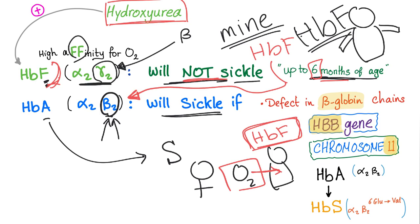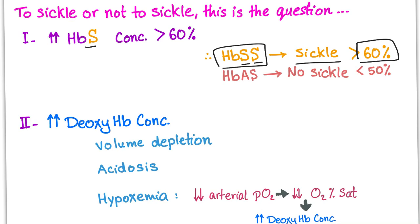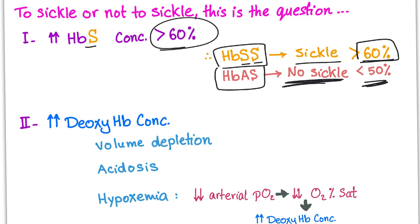With hemoglobin F you will not have sickle cell symptoms. With hemoglobin A, you absolutely can have sickle cell symptoms if there is a defect in the beta globin chain on the HBB gene on chromosome 11 — glutamic acid replaced with valine at position number 6. What are the causes of sickling? Number one: increased hemoglobin S concentration. It has to be more than 60% hemoglobin S in order to sickle. That's why sickle cell anemia, which is hemoglobin SS, will sickle, while sickle cell trait will not sickle in most cases because hemoglobin S concentration is less than 50%.